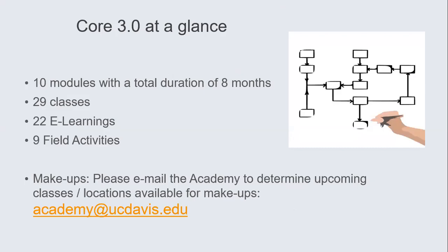Core 3.0 at a glance: it's 10 modules with a duration of eight months. We do have a fast-track Core held every summer with a three-month duration, really designed for new hires who don't have a full caseload so they can focus on training. There are 29 classes, 22 e-learnings, and nine field activities. If people need to make up a class or an activity, or if you have any questions or technical difficulties, please email the academy at academy@ucdavis.edu.